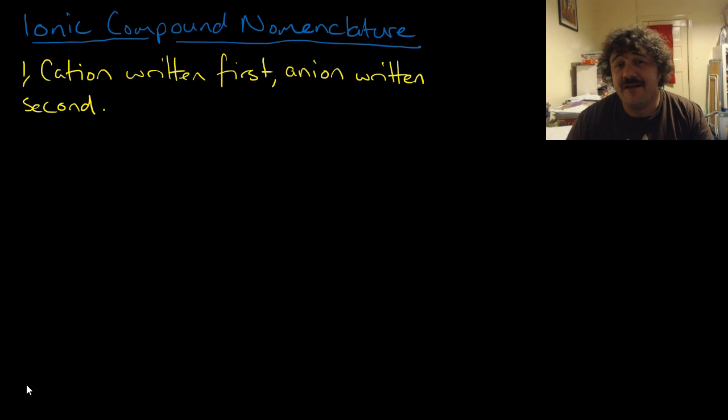All right, so the cation is written first. Remember, a cation is a positive ion and the anion is the negative ion. So this is the metal, the non-metal. The cation is written first, then anion, the negative non-metal is written second.